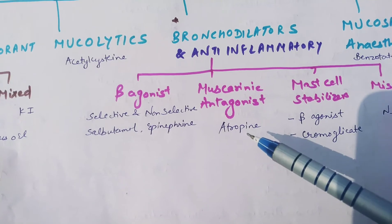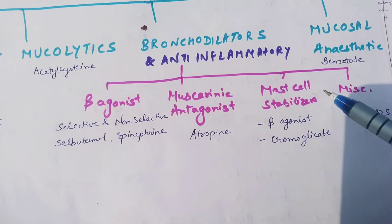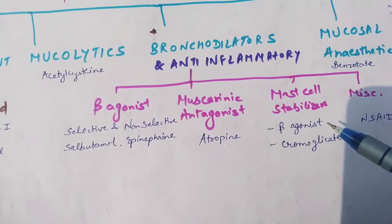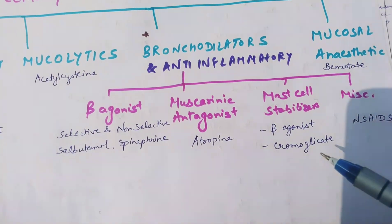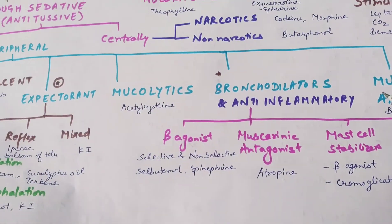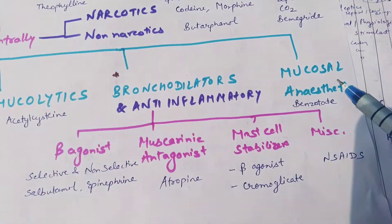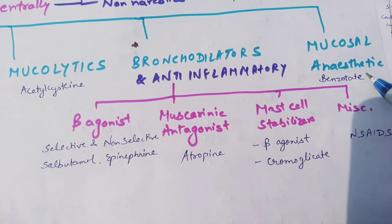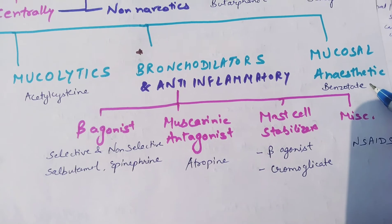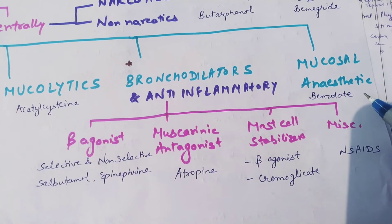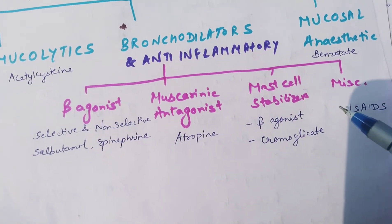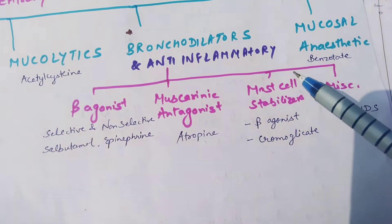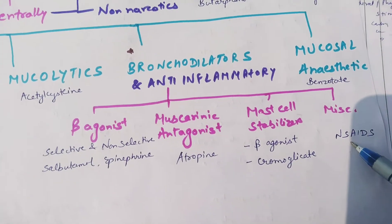Muscarinic antagonists include atropine or glycopyrrolate. Mast cell stabilizers include cromoglycate. Next, under peripheral acting drug classification, is mucosal anesthetics — benzonatate — which desensitizes the mucous membrane of the pulmonary stretch receptors. There is also a miscellaneous classification of bronchodilators, and salbutamol also comes under there.